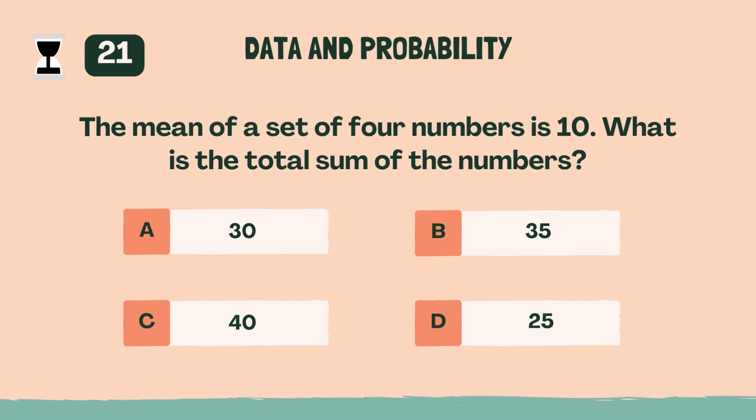The mean of a set of four numbers is 10. What is the total sum of the numbers? C, 40.